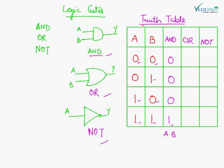For the OR gate: when both inputs are zero, the output is zero. When A is zero and B is one, the output is one. When A is one and B is zero, the output is one. When both inputs are one, the output is again one.